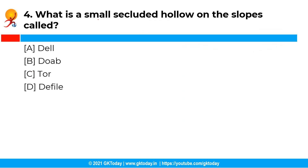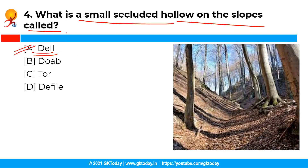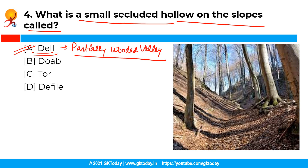Moving ahead with the next question: What is a small secluded hollow on the slopes called? The correct answer is option A, that is Dale. Dale is a small secluded hollow on the slopes of mountains. They are partially wooded valleys and are a type of slope landforms.